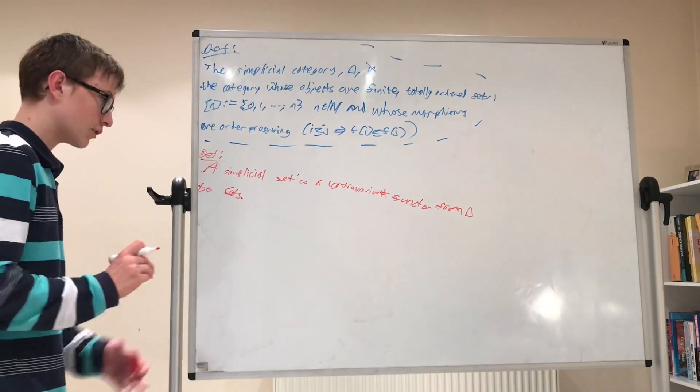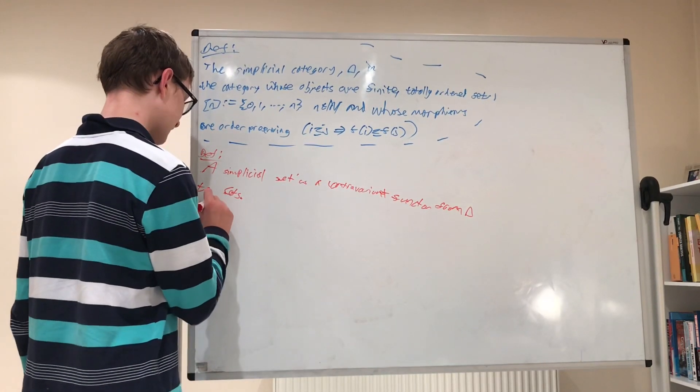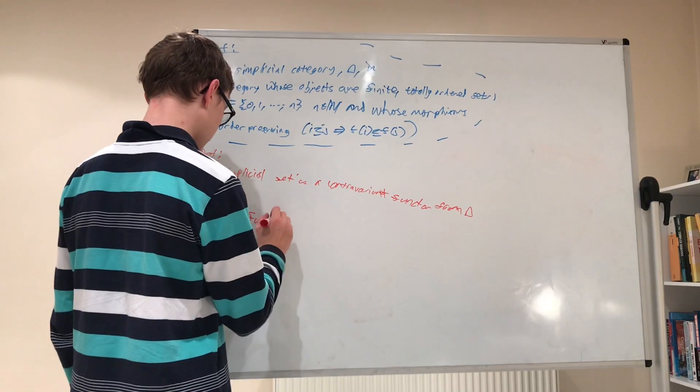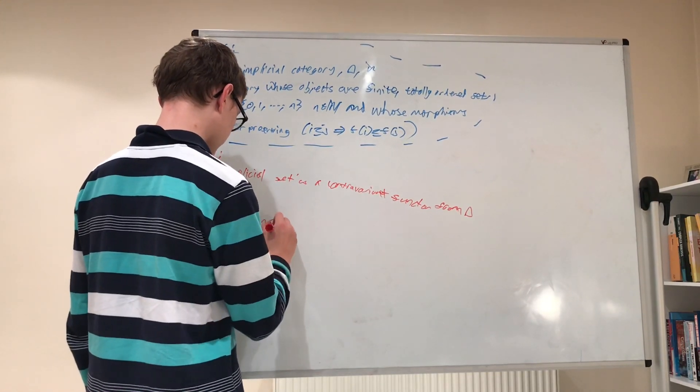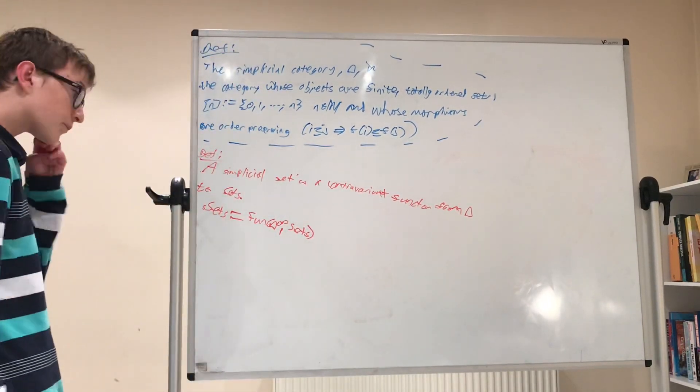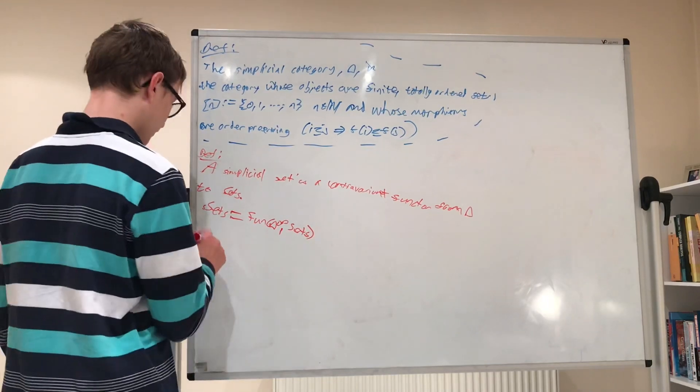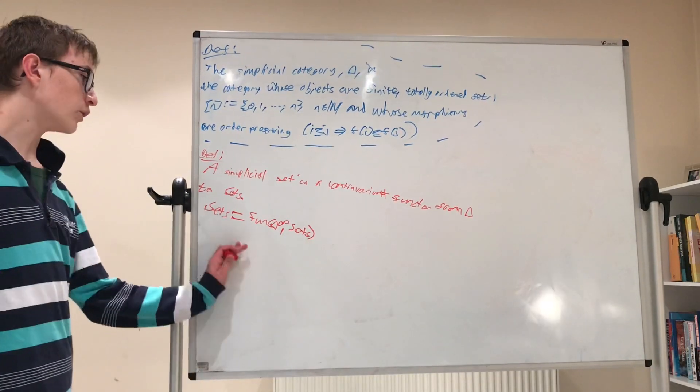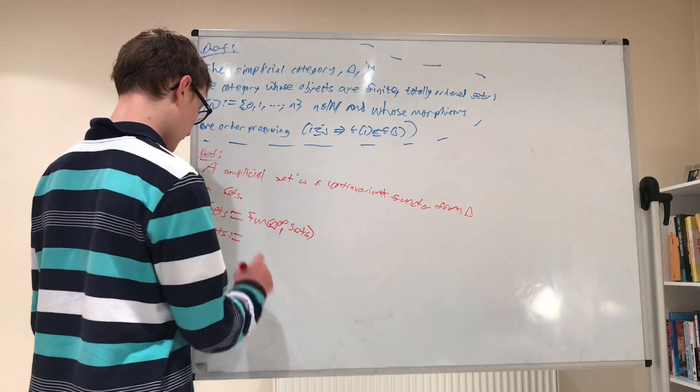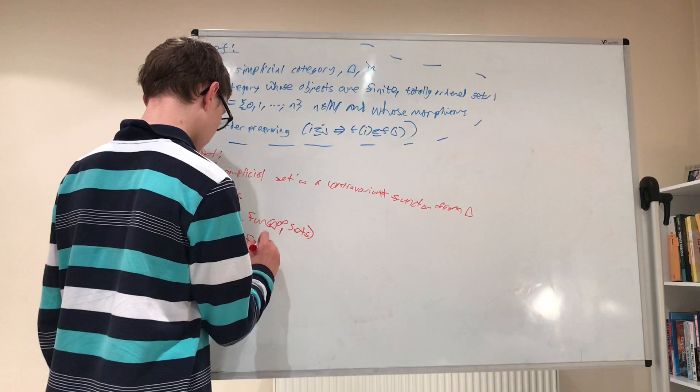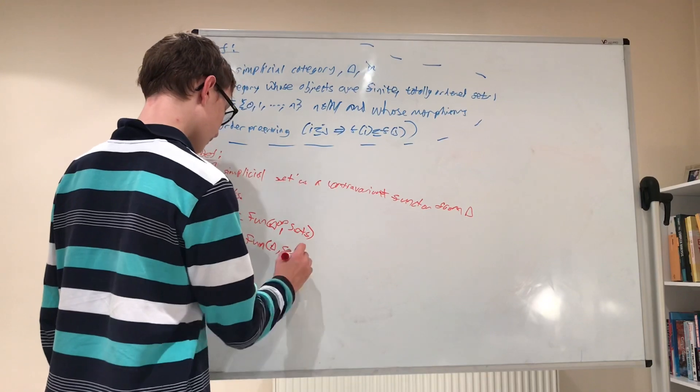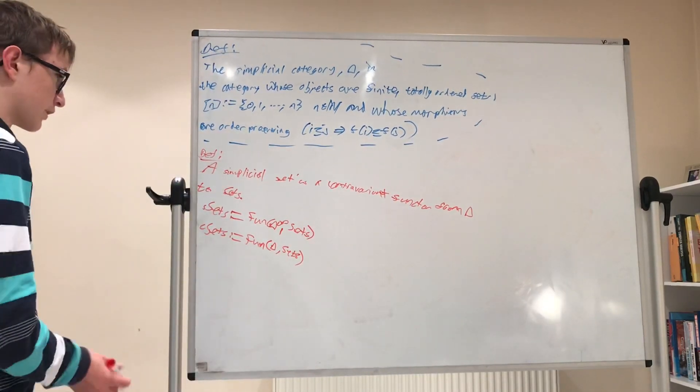Alright. And so we denote this, in order to save time, we denote this by s sets, so simplicial sets, and it's defined as the functor from the opposite category to sets. And then we're gonna have, similarly, its dual co-simplicial set, denoted by c sets, is defined as the covariant functors from the simplicial category to the category of sets.